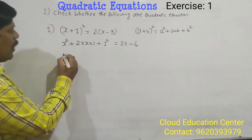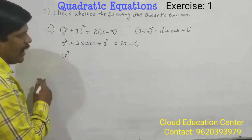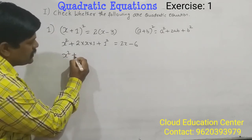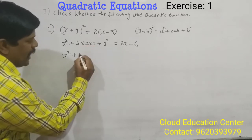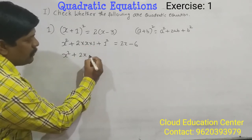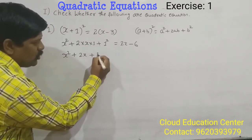Okay, now it is x square plus 2 into x is 2x, 2x into 1 is 2x plus 1 square is equal to 1 only.